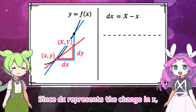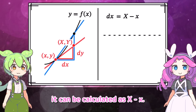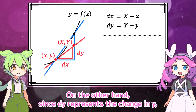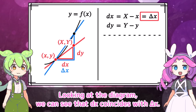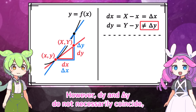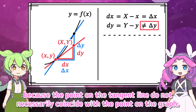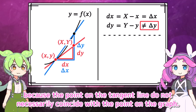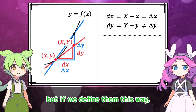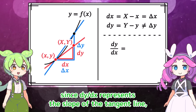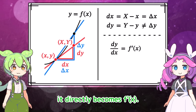Since dx represents the change in x, it can be calculated as uppercase X minus lowercase x. On the other hand, since dy represents the change in y, it can be calculated as uppercase Y minus lowercase y. Looking at the diagram, we can see that dx coincides with delta x. However, dy and delta y do not necessarily coincide, because the points on the tangent line do not necessarily coincide with the points on the graph. Since dy over dx represents the slope of the tangent line, it directly becomes f prime of x.